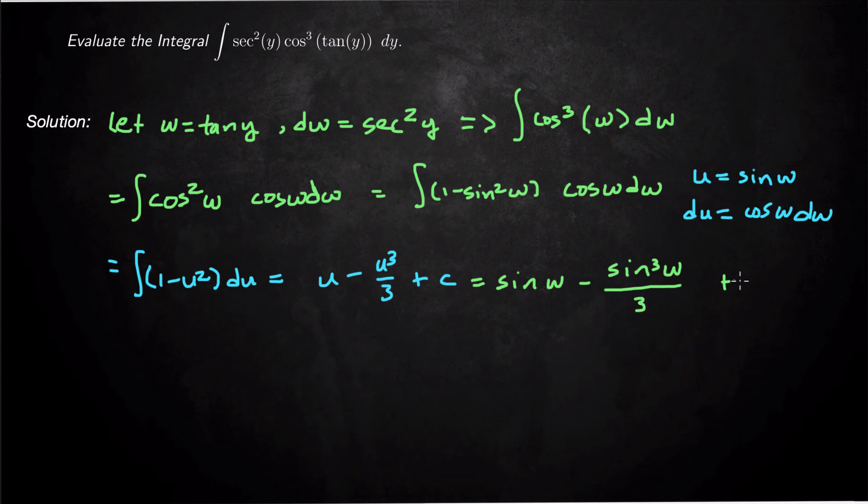And then we have to say, what was w? Well, w was just tangent of y. So this is actually going to be the sine of the tangent of y minus sine cubed of tangent y over 3 plus c. And that is our answer.